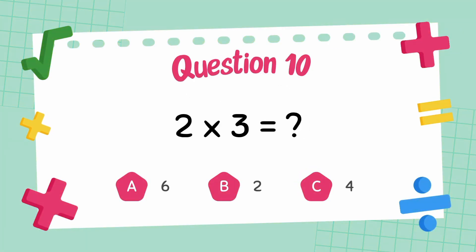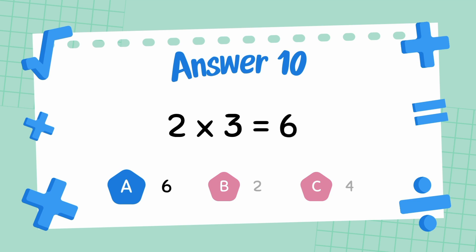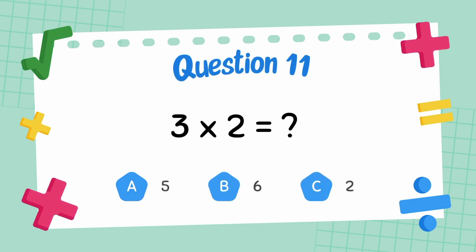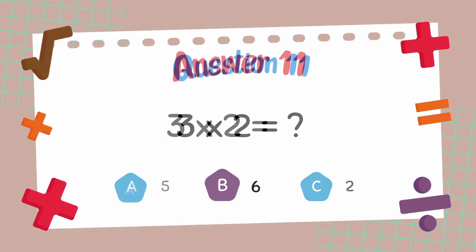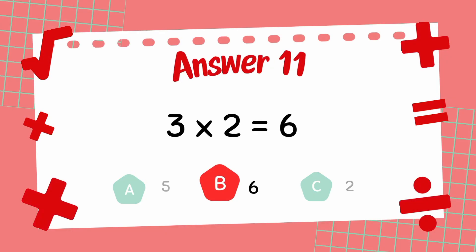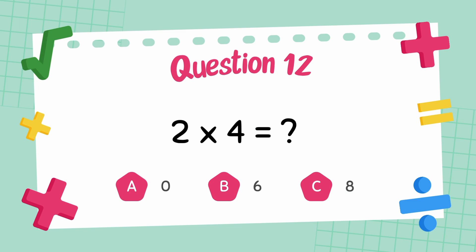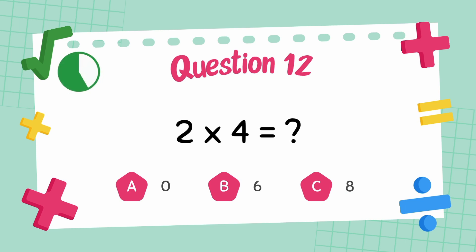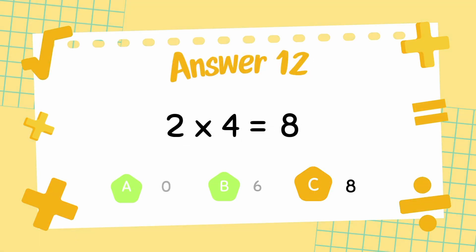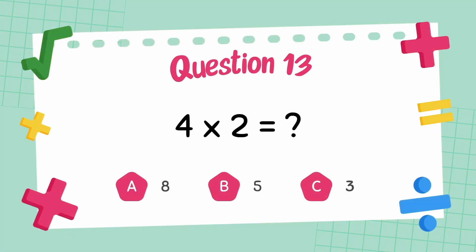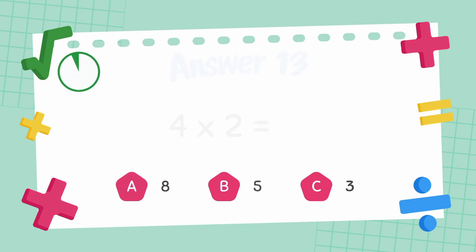What is 2 multiply 3? The answer is 6. What is 3 multiply 2? The answer is 6. What is 2 multiply 4? The answer is 8. What is 4 multiply 2? The answer is 8.